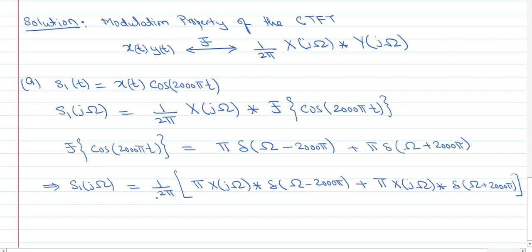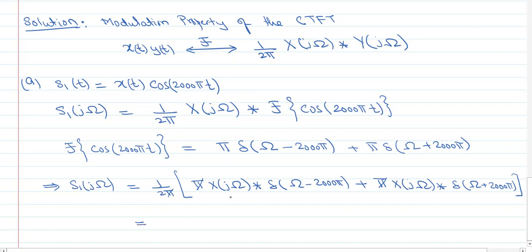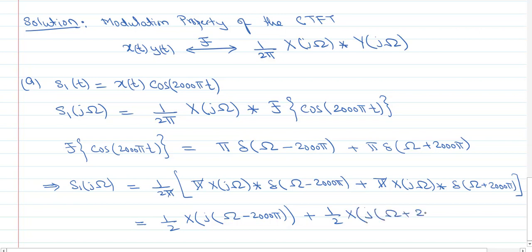The π cancels with the 2π, leaving a factor of 1/2. Using the shift property — convolving a signal with a delta shifts the signal to the delta's location — the final result is: S1(jω) = (1/2)·X(j(ω − 2000π)) + (1/2)·X(j(ω + 2000π)). That is the answer for the modulation property.